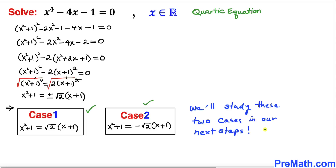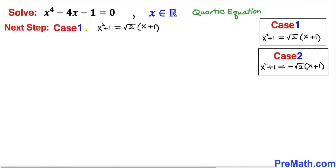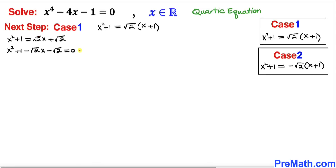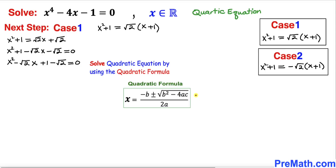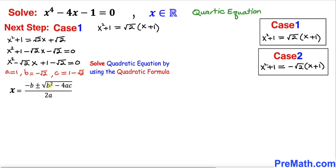Let's focus on Case 1: x² + 1 = √2(x + 1). Distributing √2 gives x² + 1 = √2·x + √2. Moving everything to the left-hand side and combining constant terms, we get the quadratic equation x² - √2·x + (1 - √2) = 0. We will solve this using the quadratic formula.